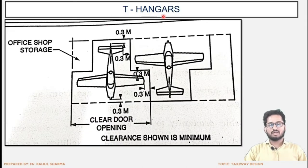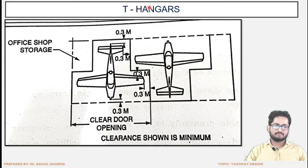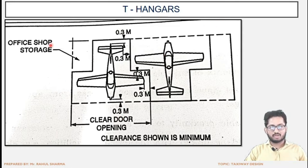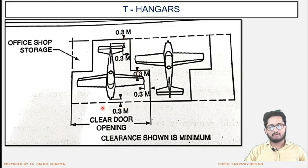This is the view for T-hangars. If we see the aircraft from the top view, it represents the shape of a T, and that is where the name is derived from. In the T-hangar, the full aircraft is under the shade of the hangar. The hangar is basically a steel truss structure, and the aircraft is completely placed inside that truss structure. The 0.3 meter level shown indicates the clearance — the minimum gap from all sides.